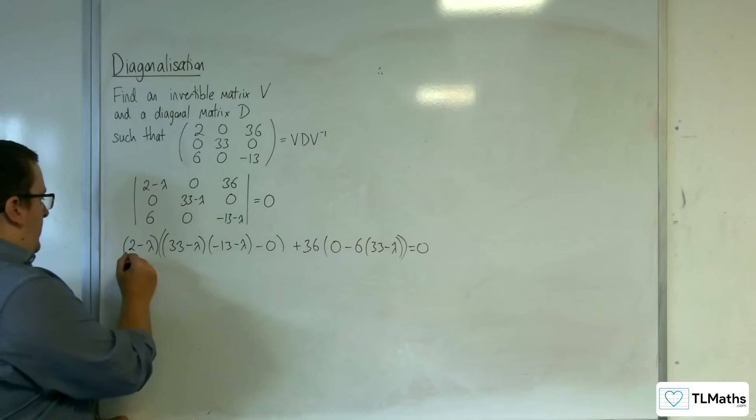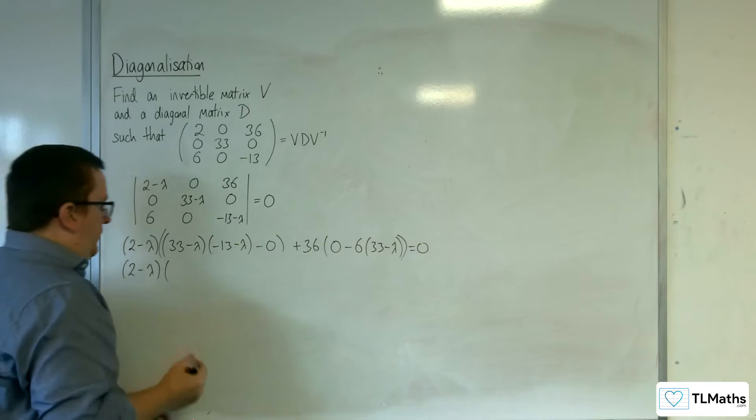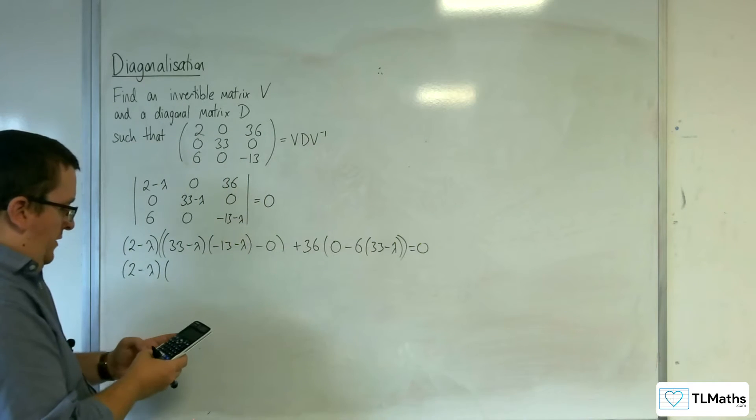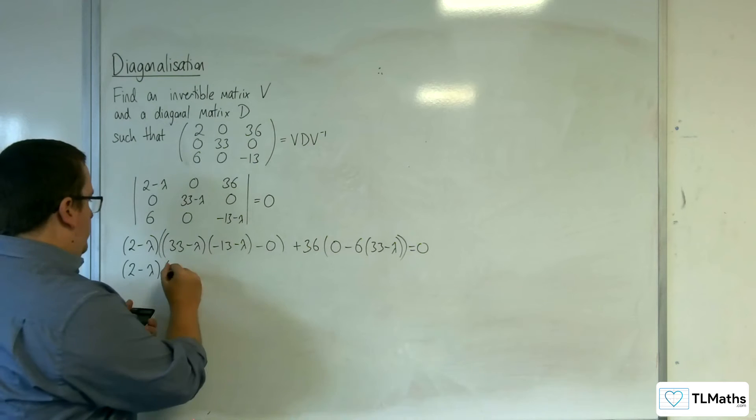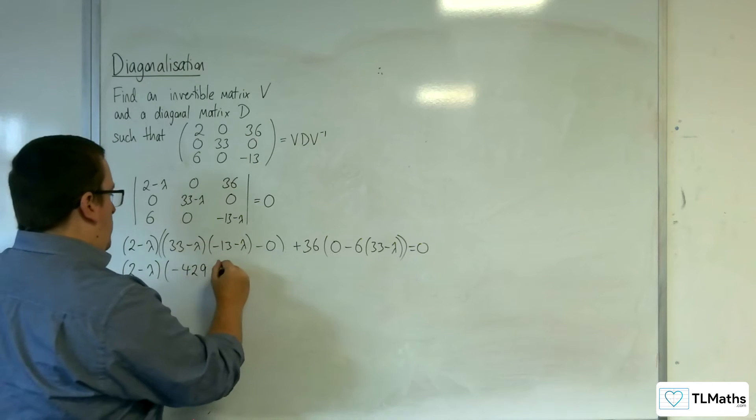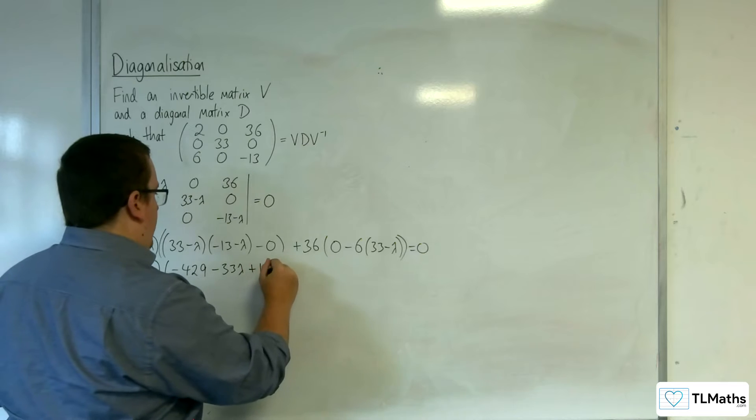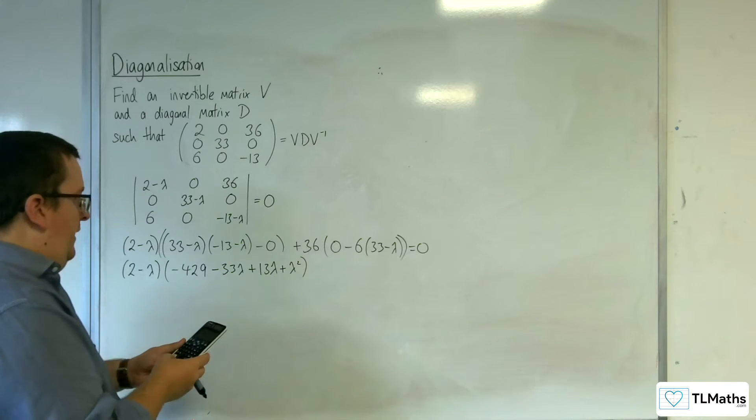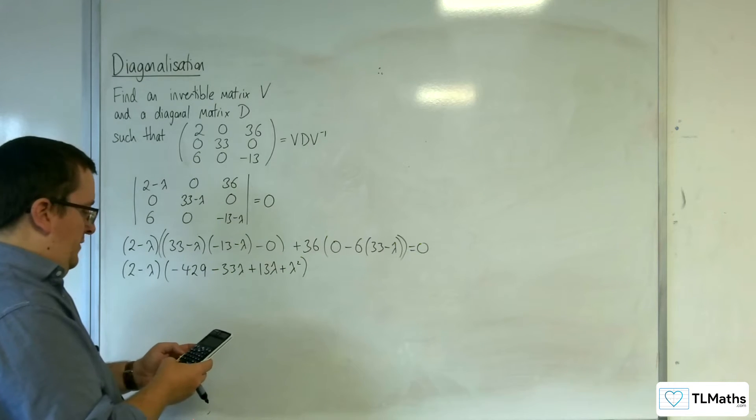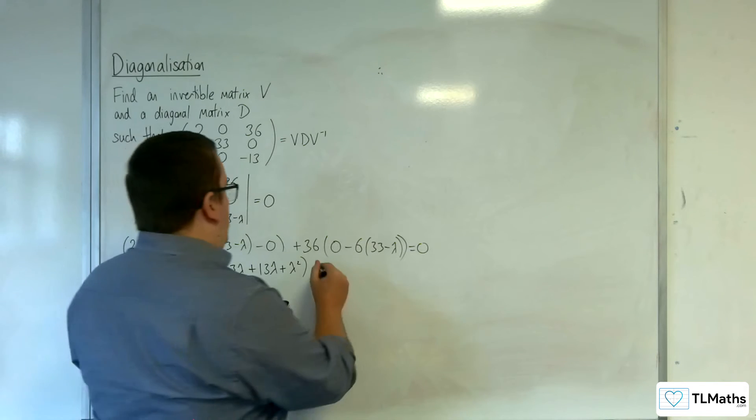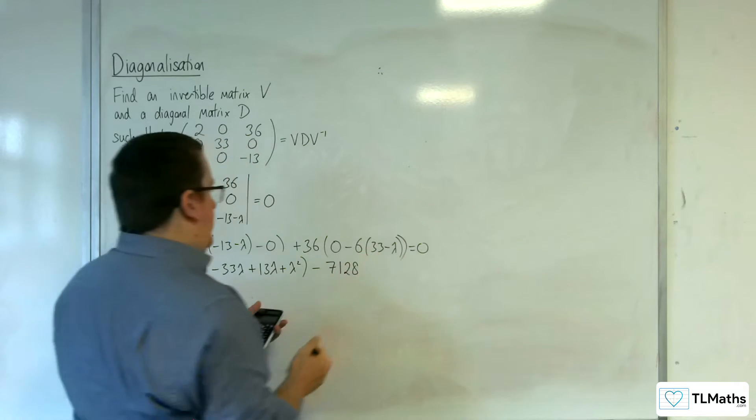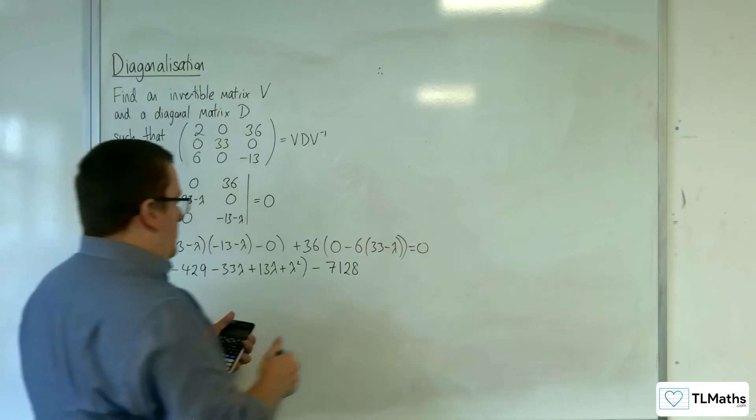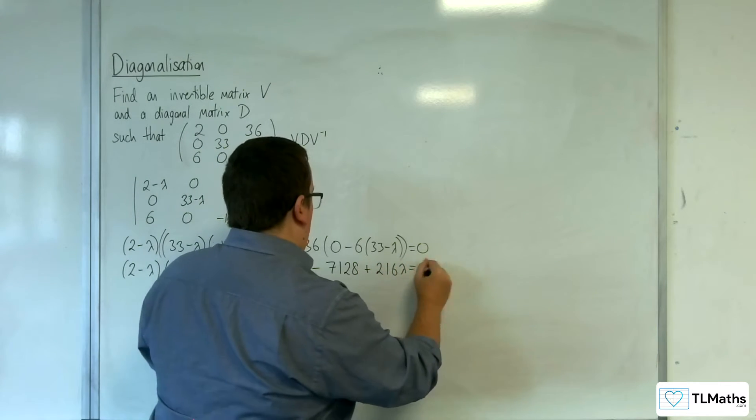So 2 take away lambda, times, we've got 33 times minus 13, so minus 429, take away 33 lambda, plus 13 lambda, plus lambda squared. Then we've got 36 times minus 6 times minus 7128, and then we've got 36 times minus 6 times minus lambda, so plus 216 lambda equals 0.